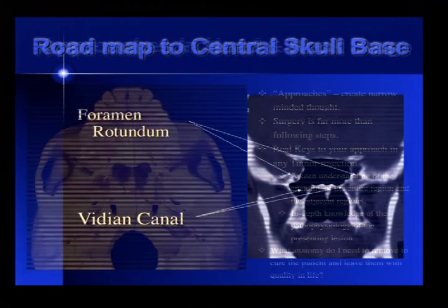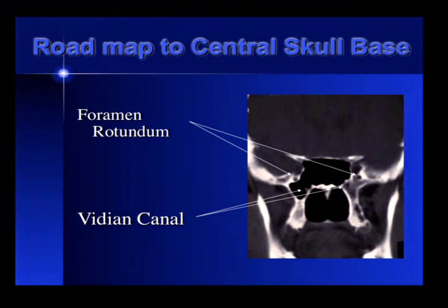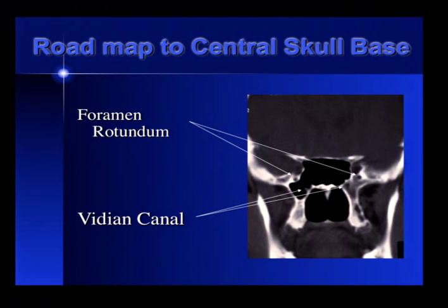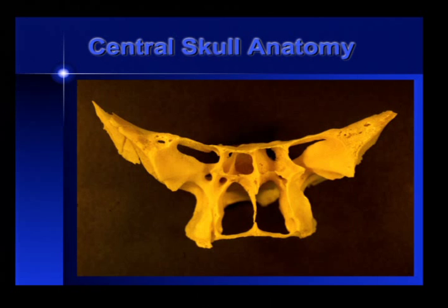Back to the residents and young doctors: if we're coming into the central skull base, there are two holes — the foramen rotundum and the Vidian Canal. These two are a road map to the skull base. If I go through the foramen rotundum, it's five millimeters to the dura. If I go through this hole right here, it's two centimeters to the carotid. It's a very simple bit of anatomy, but when you really understand it, it opens up the entire skull base to the surgical procedures you've been watching. Here in an artist's rendering from the lateral approach, the foramen rotundum is five millimeters to the dura.